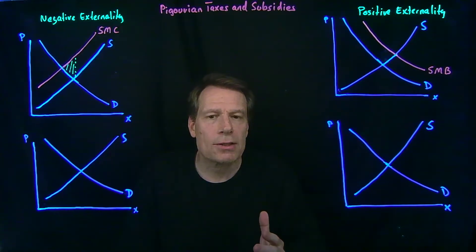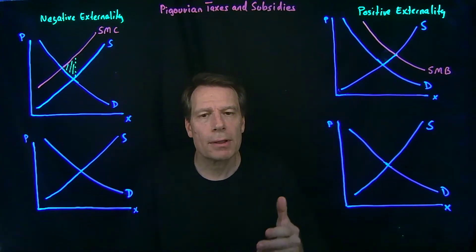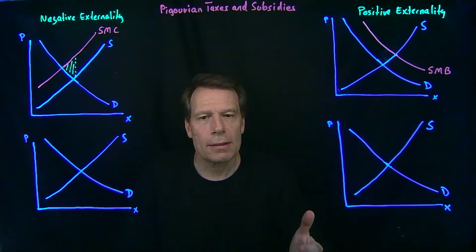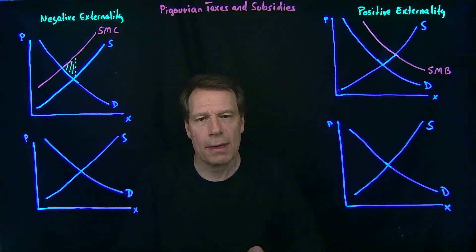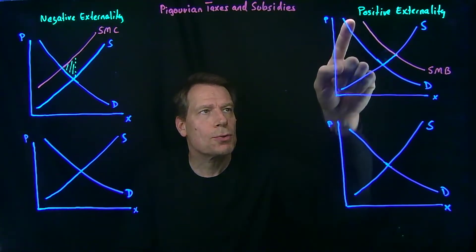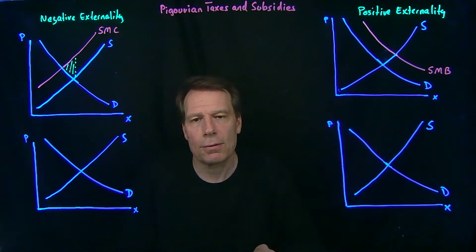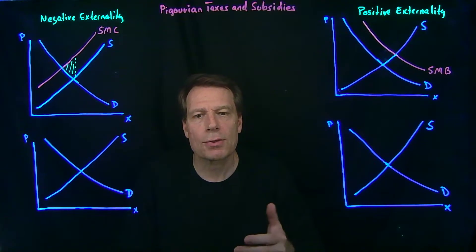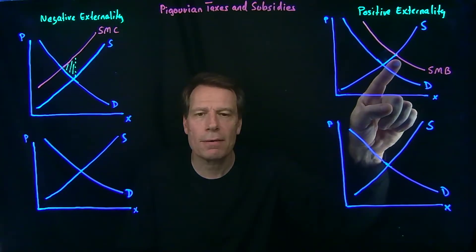In the case of positive externalities, there are non-market participants that incur positive benefits that are not captured in the demand curve, so that the social marginal benefit curve now lies above the demand curve, and the socially optimal quantity is where social marginal benefit intersects supply.